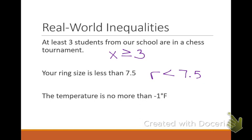The temperature is no more than negative one degrees Fahrenheit. How does it compare with my baseline value? Think about it this way — you can be no more than 12 years old to eat free, meaning all those values have to be less than or equal to. That's what no more than means: my values have to be less than or equal to that number. It can't exceed that value; it can't be more than.